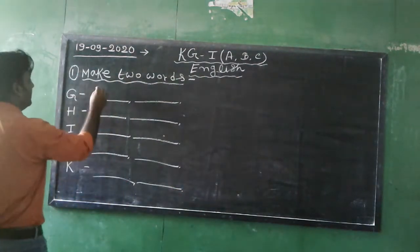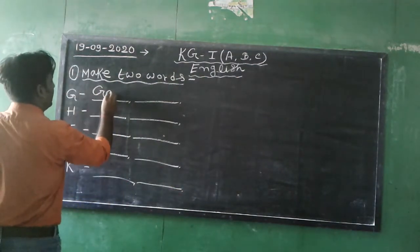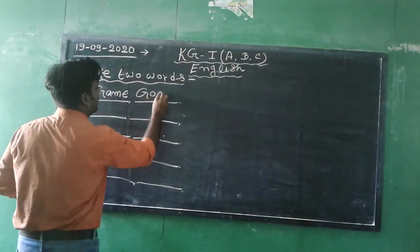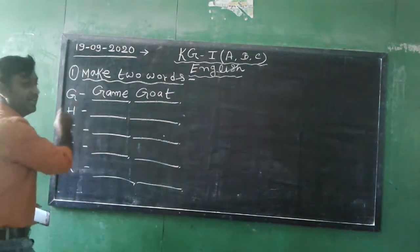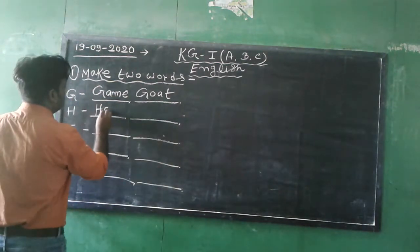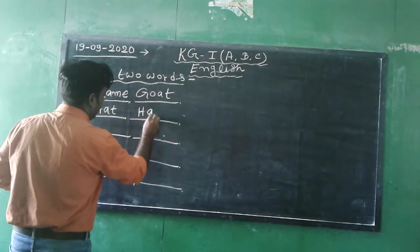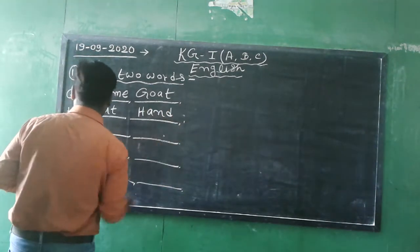Make two words. G for game, G-A-M-E game, and goat, G-O-A-T goat. Next, H for hat, H-A-T hat, and hand, H-A-N-D hand.